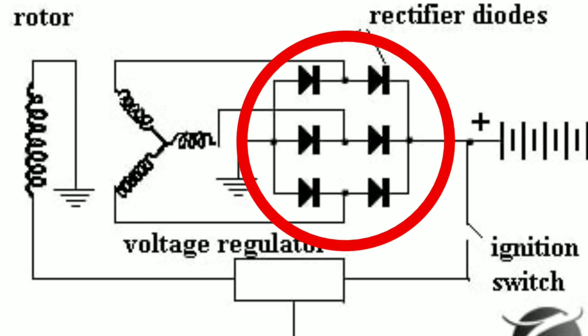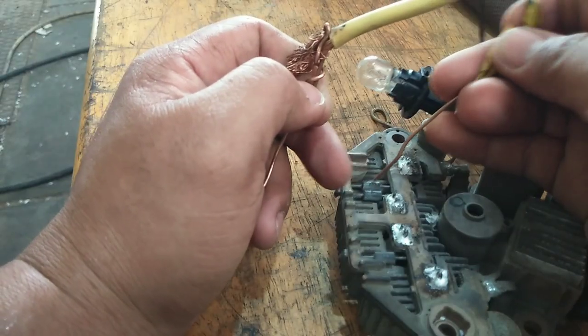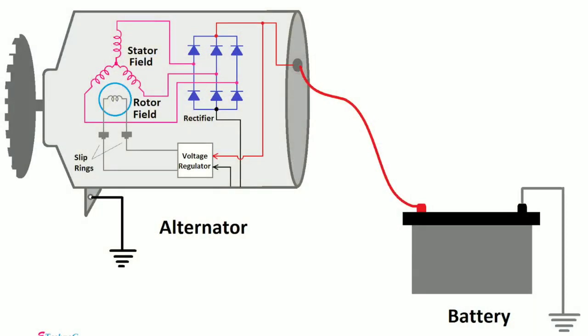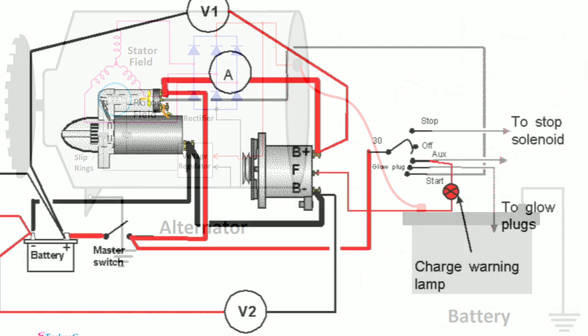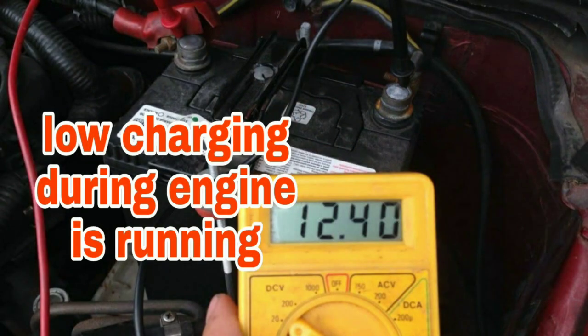Remember, if only one or two diodes have failed, the alternator may still produce enough current to meet the vehicle's electrical needs, but it may not be enough to keep up with higher loads or keep the battery fully charged. It can also cause rapid changes in the output voltage of the charging system.